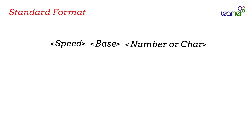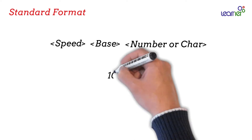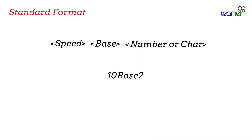For example, 10Base2 means this standard can transmit data up to 10 megabits per second and up to about 200 meters. And 100BaseTX means 100 megabits per second, and the cable type is twisted pair.